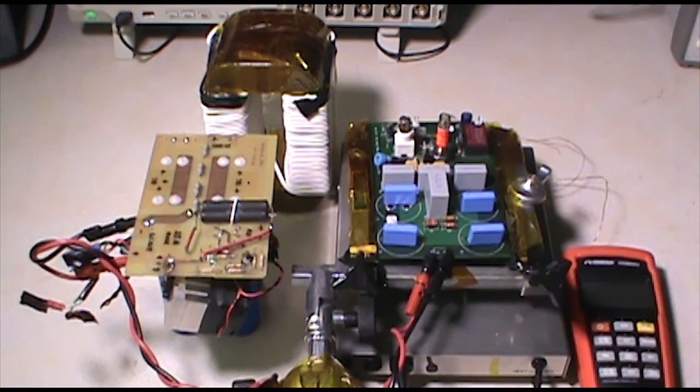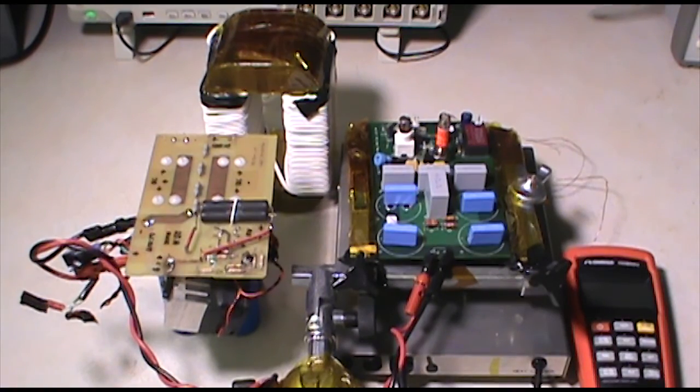Based on the prepared double pulse test setup, dynamic tests are done on the devices from 25 degrees C up to 200 degrees C. From the captured waveforms on the oscilloscope, the losses are calculated. That was all about my video nugget. Thanks for watching.